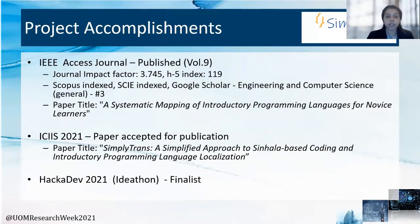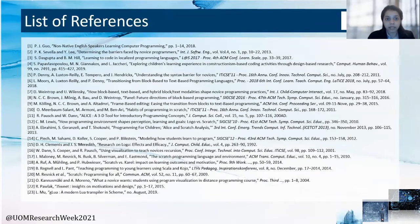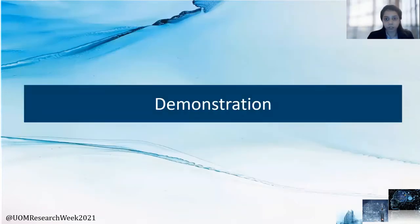We also have several publications related to this project. A paper titled 'Systematic Assessment of Introductory Programming Languages for Novice Learners' has been published in Volume 9 of the IEEE Access Journal. Another paper titled 'Simply Trans — Simplified Native-Language-Based Coding and Introductory Programming with Localization' is to be published at the 16th IEEE International Conference on Industrial and Information Systems next month. This project was also presented at the 2021 National Science and Engineering Camp. As further work, we hope to integrate additional external support tools and conduct a more thorough evaluation of the entire system.